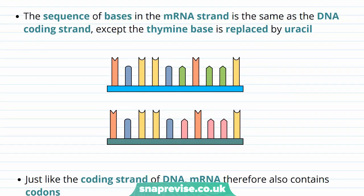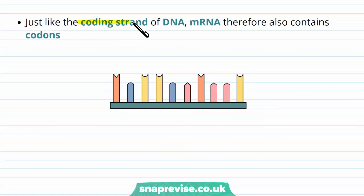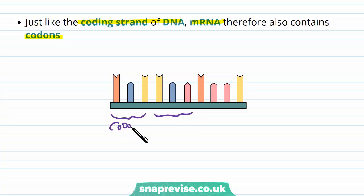The sequence of bases in the mRNA strand is the same as the DNA coding strand, but thymine is now replaced by uracil. Every time there was a thymine on DNA, there is now a uracil on the mRNA. Just like the coding strand of the DNA, the gene on the mRNA is made up of codons, and when this goes into translation — where we make the protein — it will be read in groups of three: codon one, two, three, and so on.